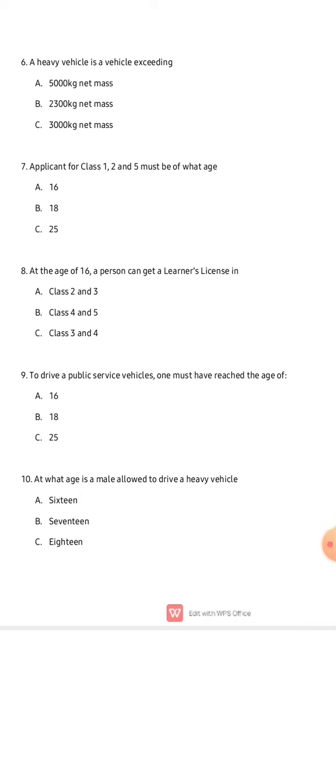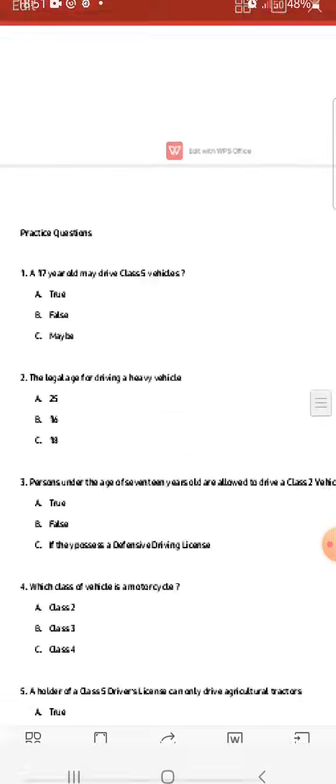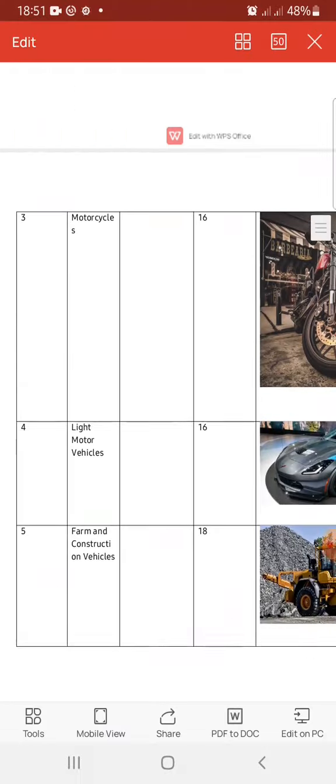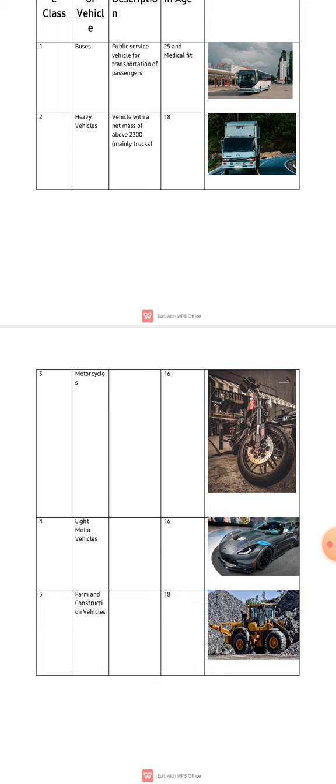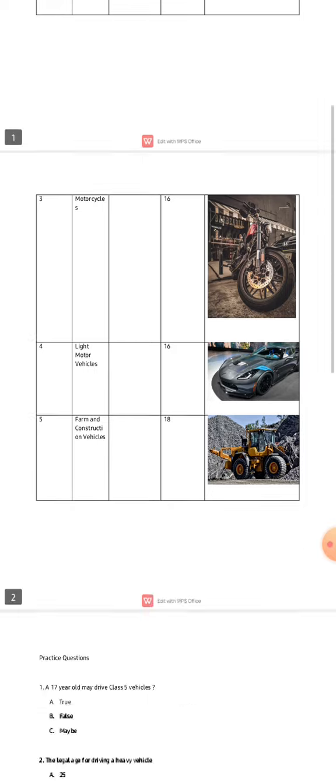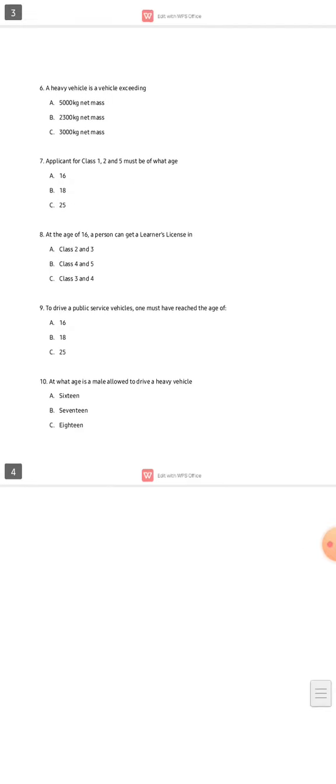Question eight: at the age of 16 a person can get a learner's license in which class — class two or three, class four or five, or class three and four? Going back to our notes, class three and class four are only available for people who are 16 years of age. The correct answer is class three and four.